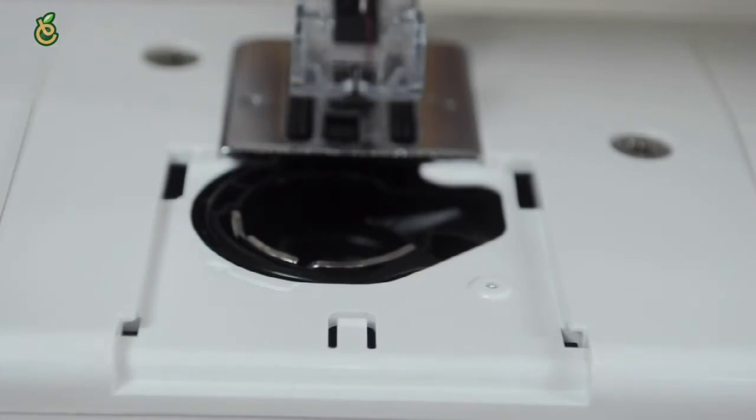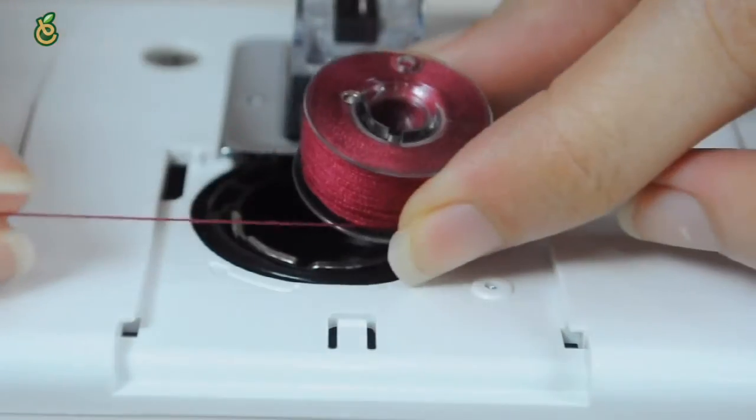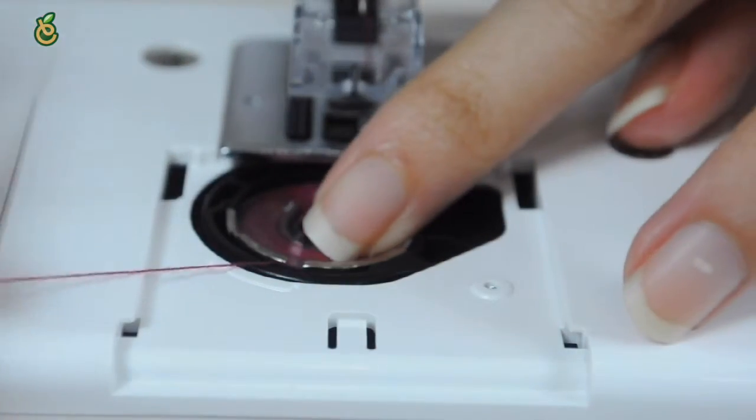To insert the bobbin, place the bobbin in the bobbin holder with the thread turning off counter-clockwise.